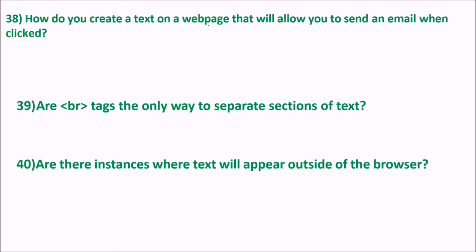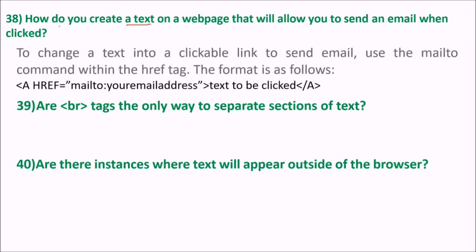How do you create text on a webpage that will allow you to send an email when it is clicked? For that, you will use the anchor tag and change text into a clickable link to send email. You have to write the reference using the mailto command with the href attribute. Write mailto: followed by your mail address, then whatever text you need to be clicked, and close the anchor tag.